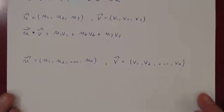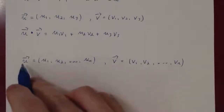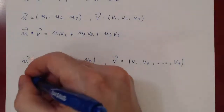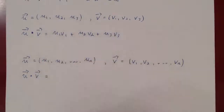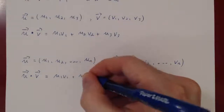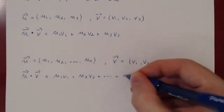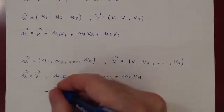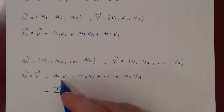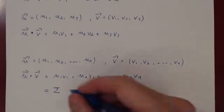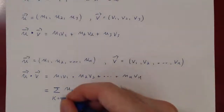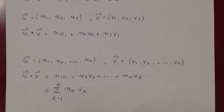And of course, if we went to Rn — which we will do very shortly — if you have a vector with n components, u1, u2, u3 up to un, and v1, v2, v3 up to vn, the dot product is the same: simply multiply corresponding entries and add them up. So u1 times v1, plus u2 times v2, plus dot dot dot, up to un times vn. We can write this more concisely using sigma notation: the sum of uk times vk, where k goes from 1 to n. And this is your dot product.